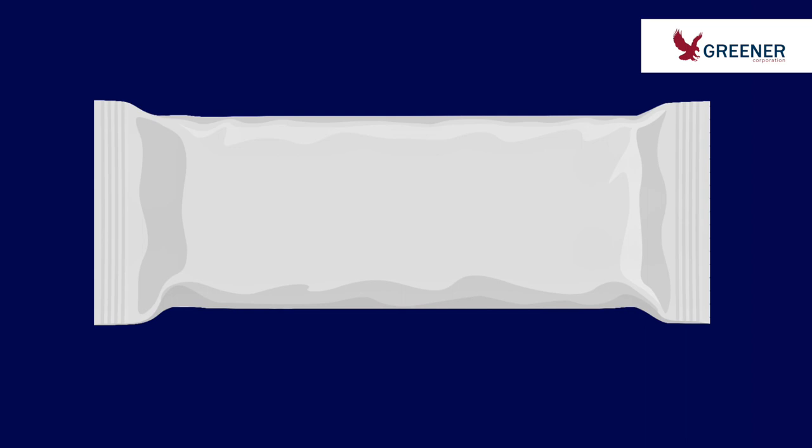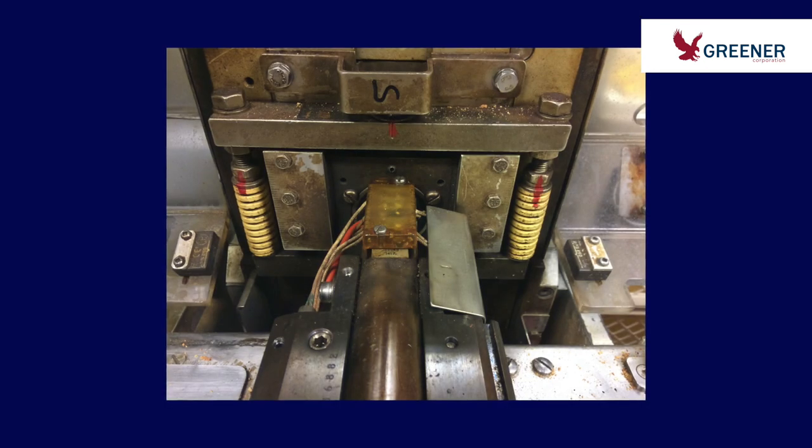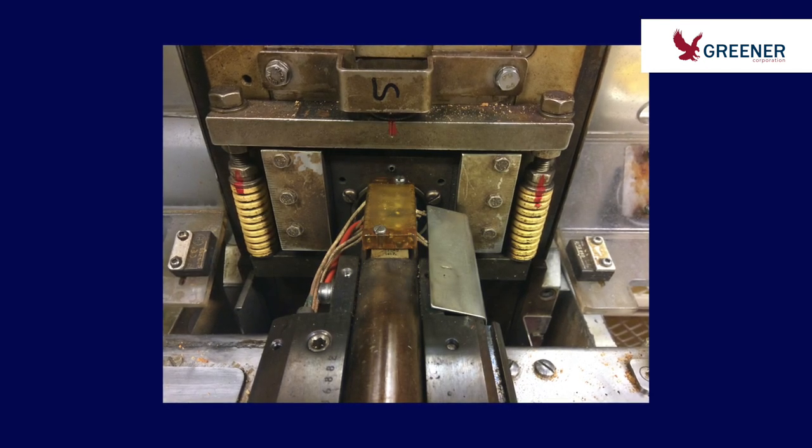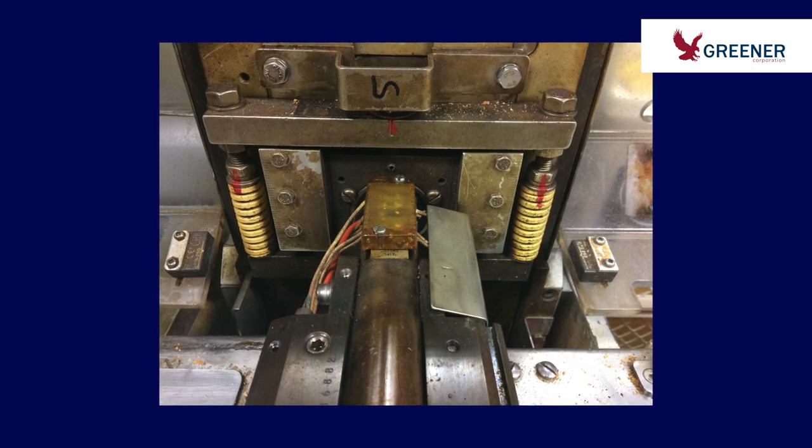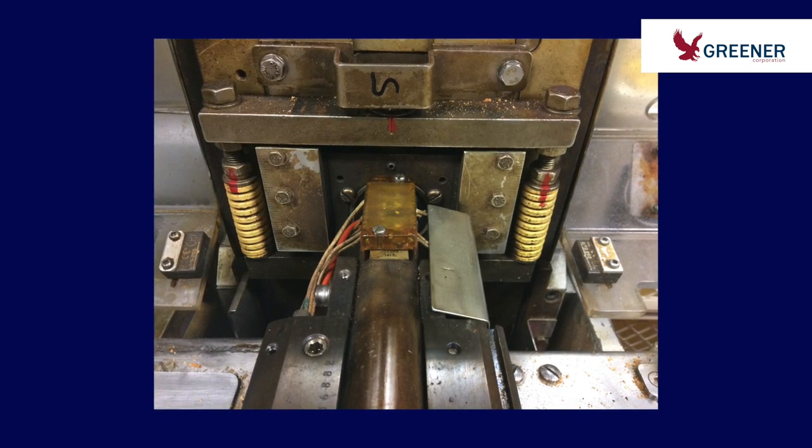If seal quality has not improved, then we need to continue our investigation. Another reason that knives may need to be over-adjusted is to compensate for issues with springs. Back off your knife adjustment, then visually inspect the springs to make sure they are all adjusted evenly.